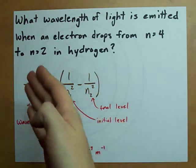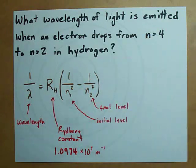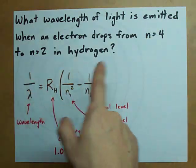Hey guys! What wavelength of light is emitted when an electron drops from the fourth energy level to the second energy level in hydrogen?